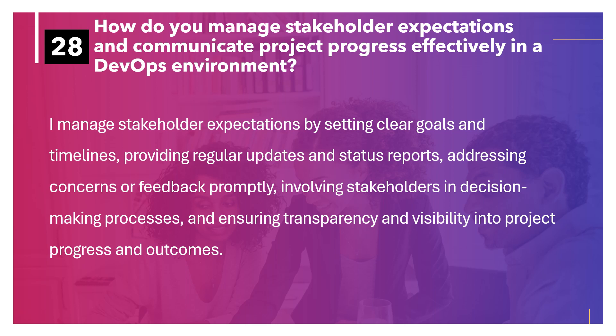How do you manage stakeholder expectations and communicate project progress effectively in a DevOps environment? I manage stakeholder expectations by setting clear goals and timelines, providing regular updates and status reports, addressing concerns or feedback promptly, involving stakeholders in decision-making processes, and ensuring transparency and visibility into project progress and outcomes.